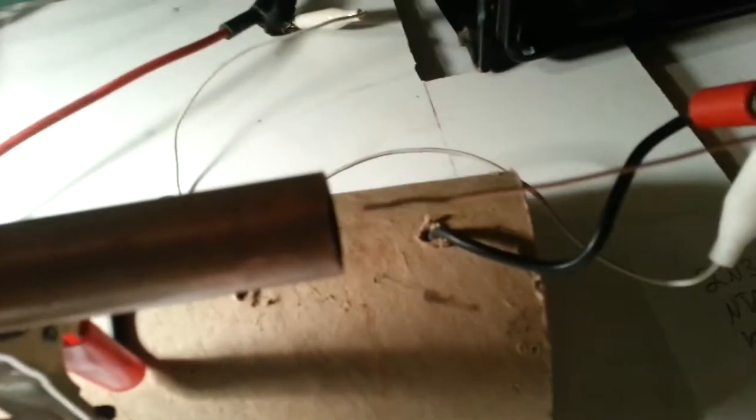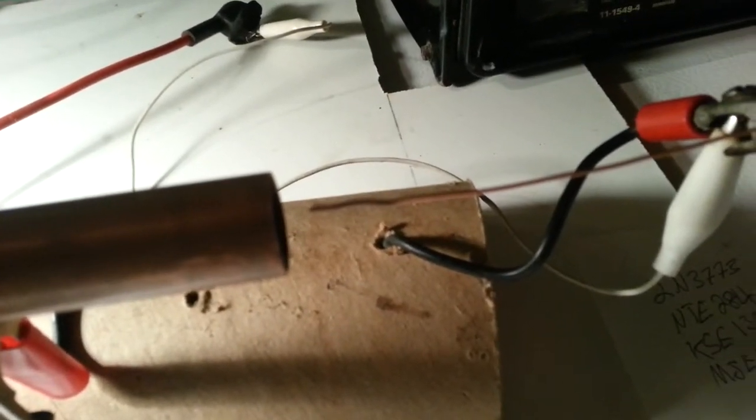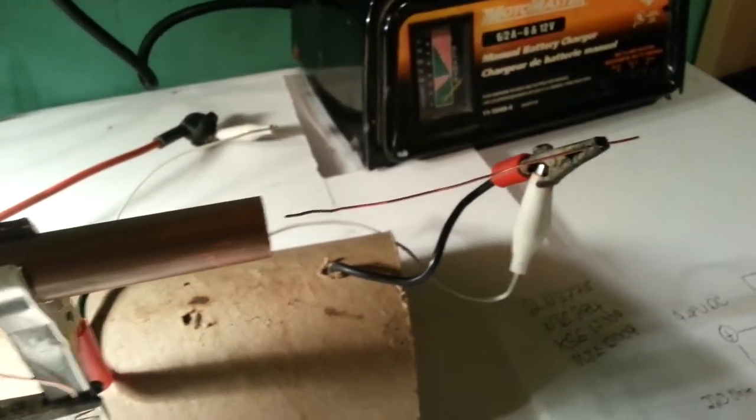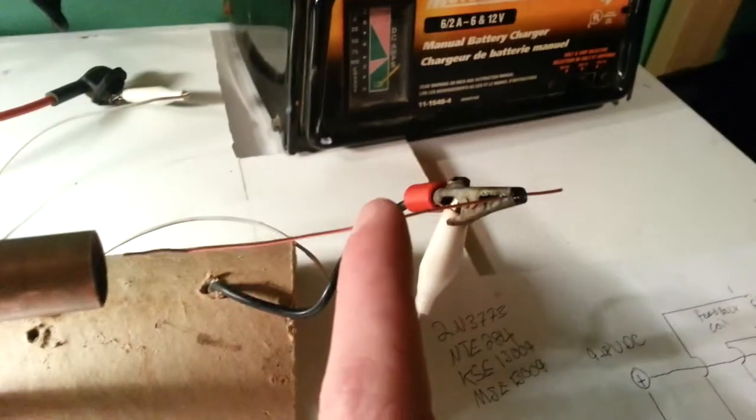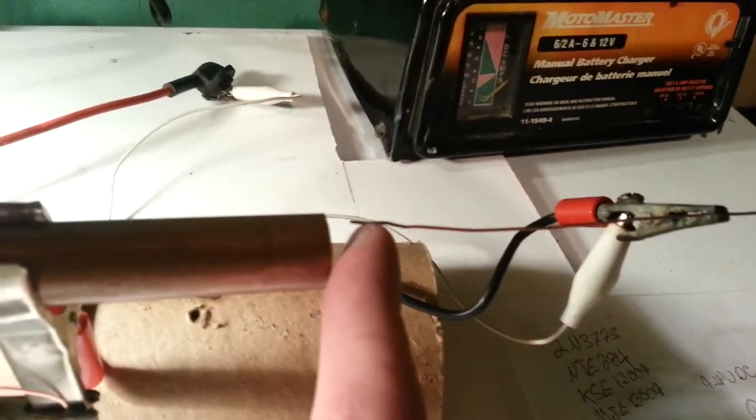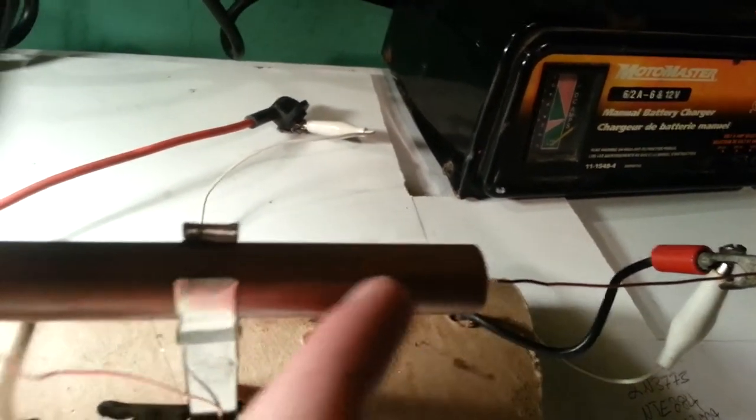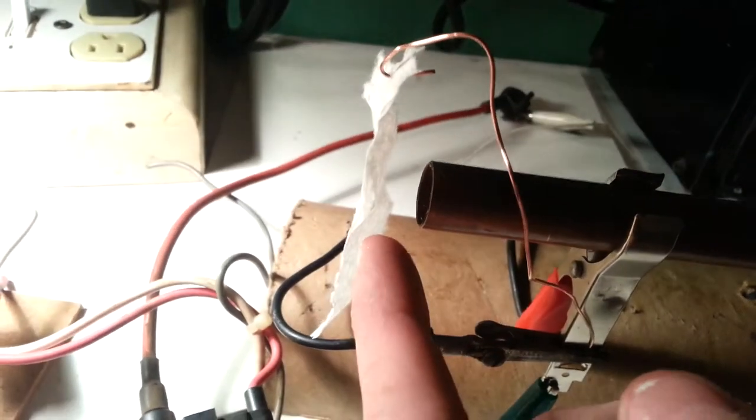And this copper tube here is its ground. It's far enough away so it doesn't create sparks, but it will create corona. And what ion wind is, is pretty much wind coming from this probe here, going through the tube and accelerating. And you will see this move.